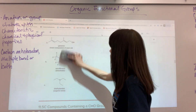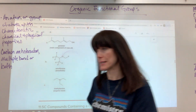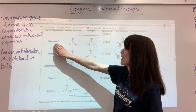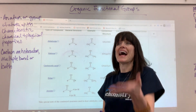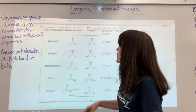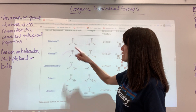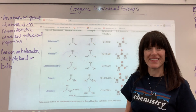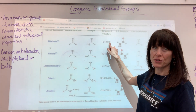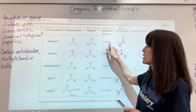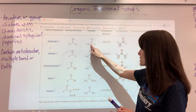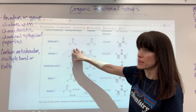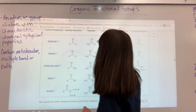Now let's look at functional groups that contain some sort of double bond. An aldehyde is specifically at the end — it's always going to be at the end of the organic molecule. That last carbon contains a double-bonded oxygen and a hydrogen. In condensed form it's written CHO, and the IUPAC suffix is -al.